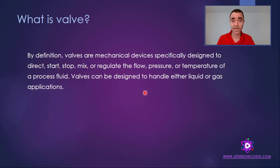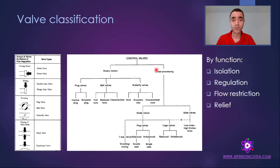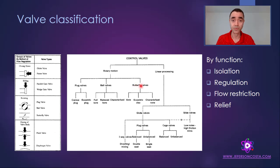Different types of valves will have different orifices, which leads to different pressure drops and different flow through the valve. Valves can be classified in different ways — for instance, by the method of flow regulation: closing down, sliding, rotating, or flexing of the valve body. From the perspective of chemical process engineering and plant design, the most important classification is based on function. The four main functions of a valve are isolation, regulation, flow restriction, and relief.